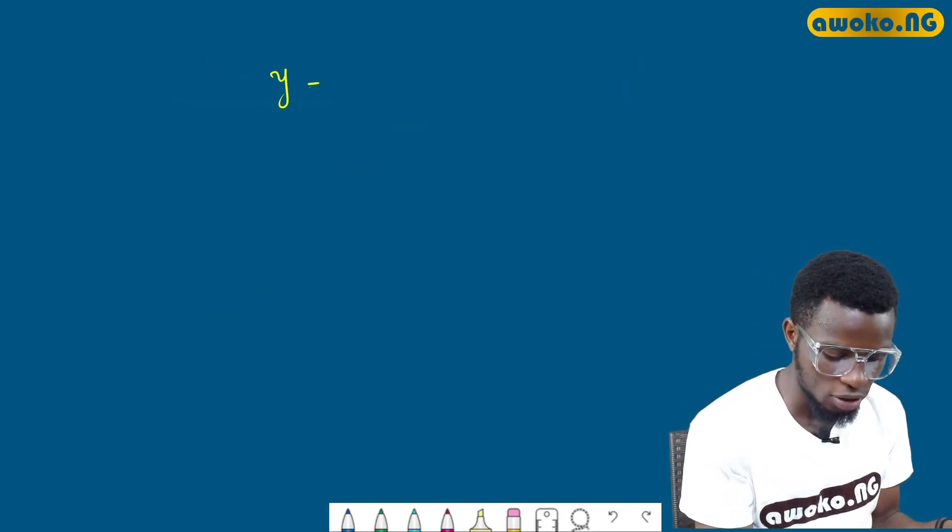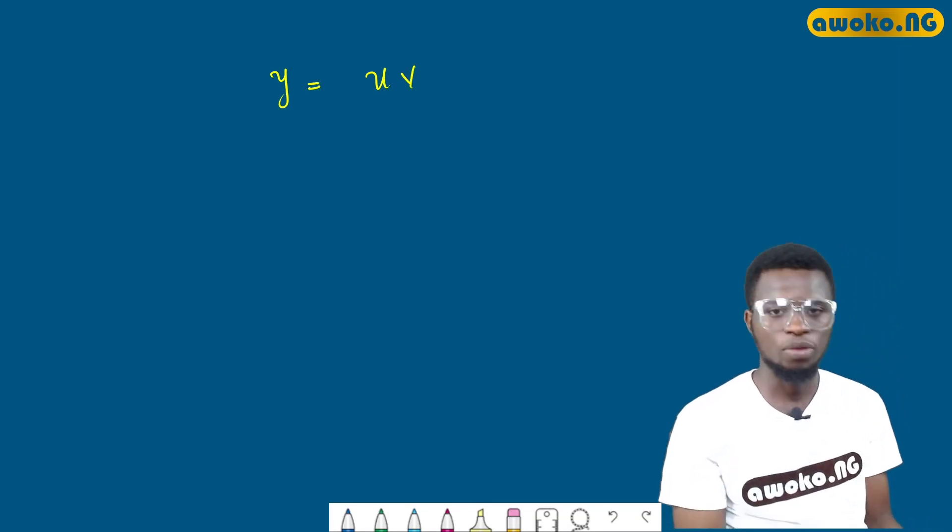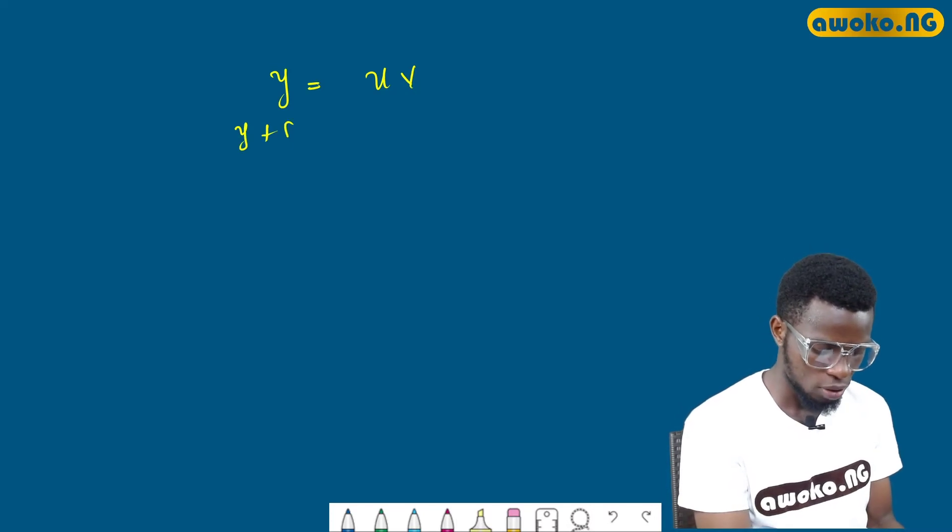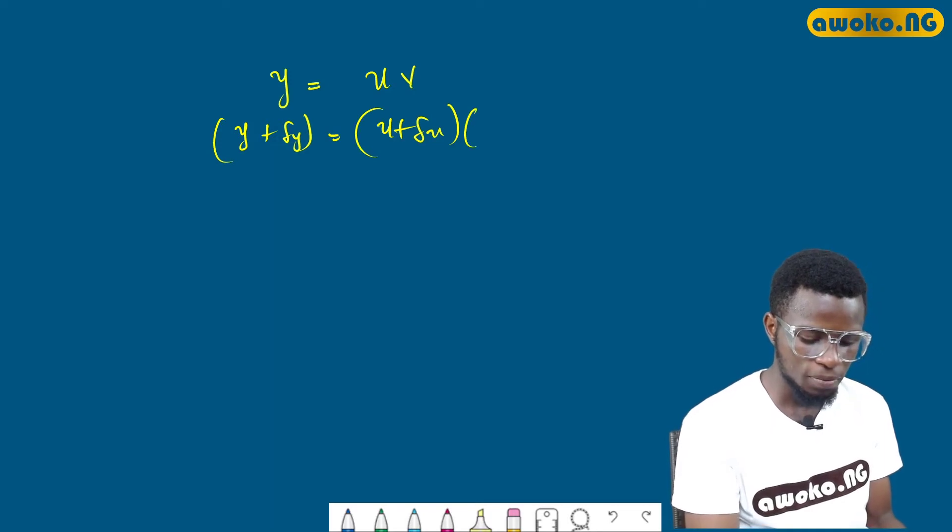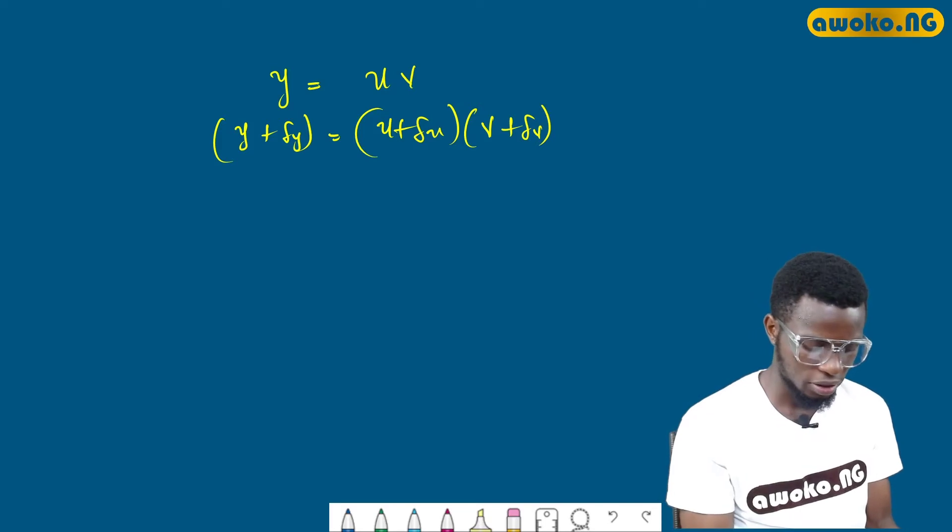We have y to be equal to uv. From the first principle, we have y plus dy equals (u plus du)(v plus dv). That is the first step.